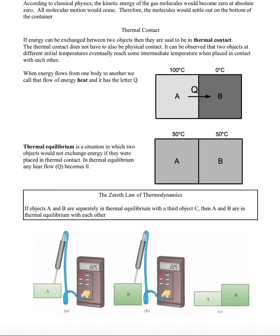In the diagram here, there's a 100-degree object A in contact with a 0-degree object B, so thermal energy is expected to flow from A to B over time, until they eventually reach some intermediate temperature.